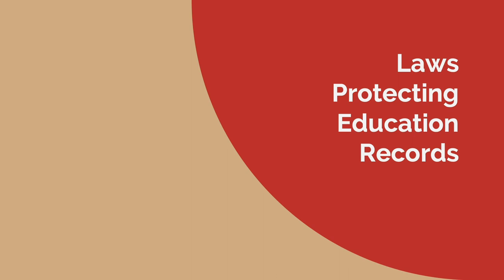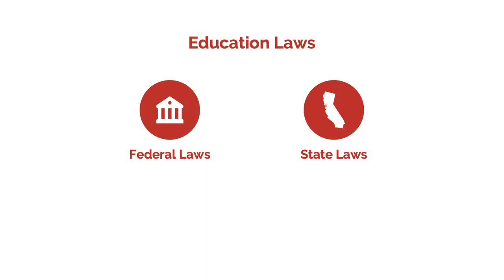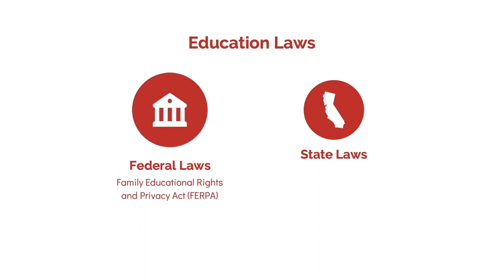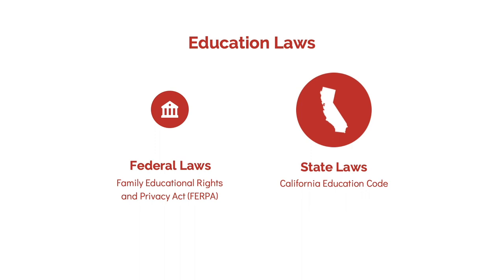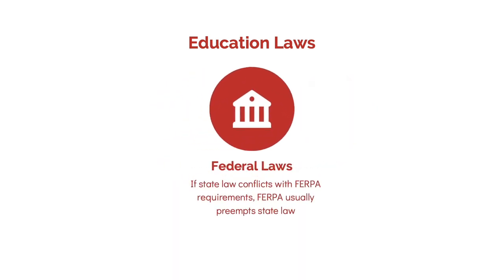Next, let's review the laws that apply to control the release of education information and records, which is the information held by an educational agency or individual who works for an educational agency. In California, there are both federal and state laws that apply. At the federal level, there is FERPA, which protects the privacy of individually identifiable education records held by certain educational agencies. There are also state laws in the California Education Code that protect the privacy of pupil records, including a state statute that provides special protections for educational counseling information. If state law conflicts with FERPA requirements, FERPA usually preempts state law.